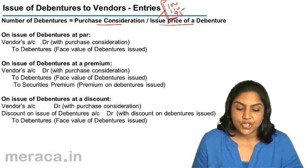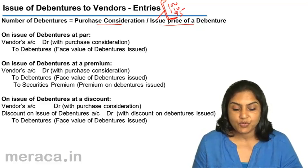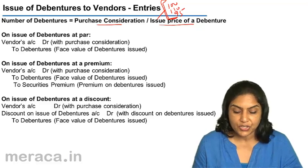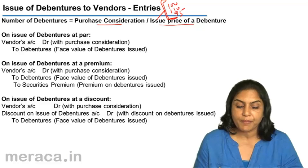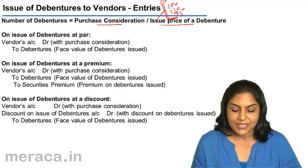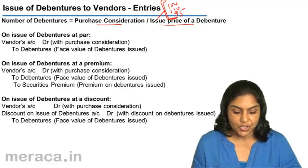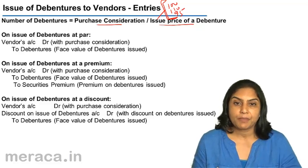When debentures are issued at par to the vendor, the entry is: Vendor's account debit to Debentures. If they are at a premium, it is Vendor's account debit to Debentures, to Securities Premium. And in case it is at a discount, it is Vendor's account debit with the purchase consideration, Discount on Issue of Debentures account debit, to Debentures.